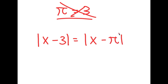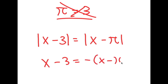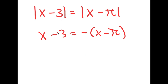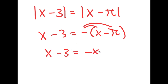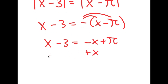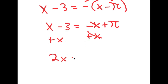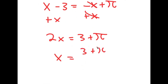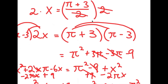So the reason this is important is because now I get the absolute value of x minus 3 is equal to the absolute value of x minus pi, which gives two cases: x minus 3 equals negative(x minus pi), or negative(x minus 3) equals positive(x minus pi). If we solve x minus 3 equals negative x plus pi, adding x on both sides gives 2x equals 3 plus pi, so x equals 3 plus pi over 2 — which is exactly what we started with.